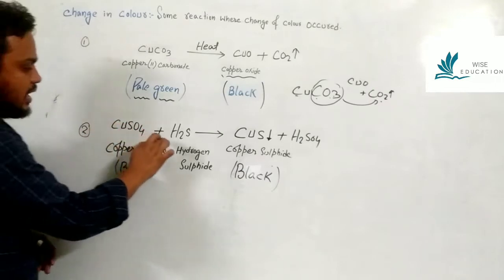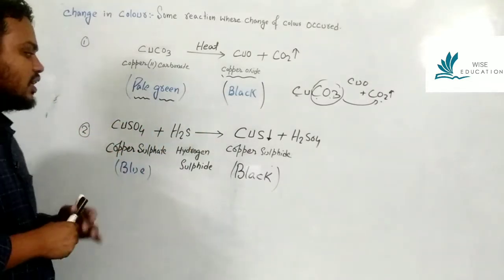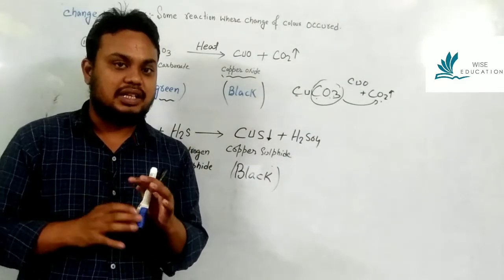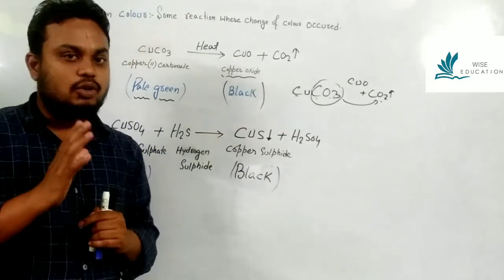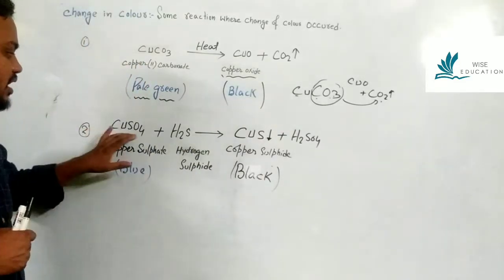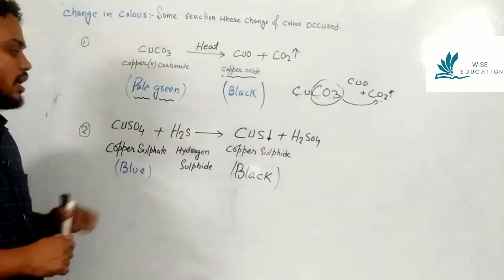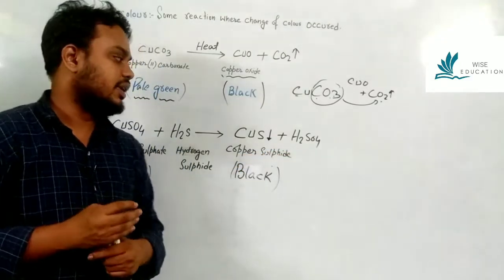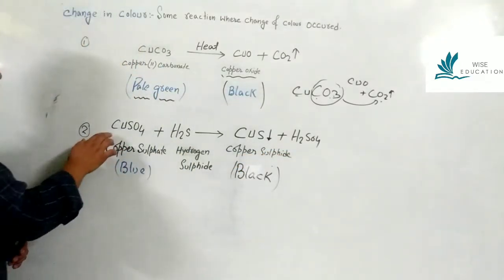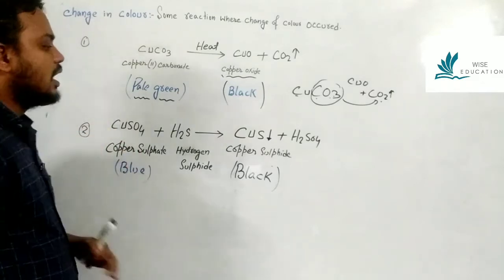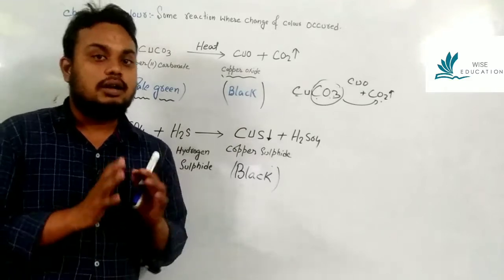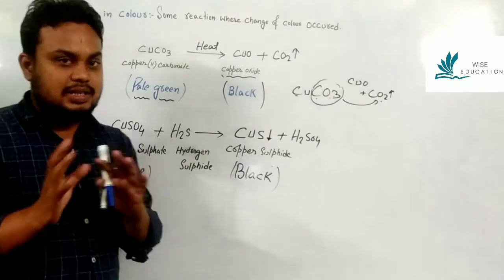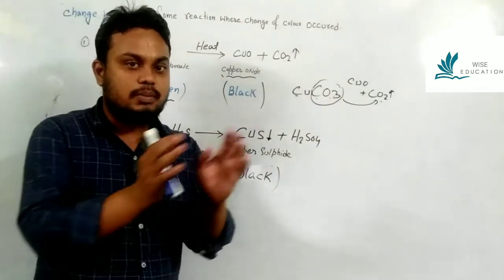Another example: copper sulfate when it reacts with hydrogen sulfide — here the change of color is observed. Copper sulfate is blue, and copper sulfide is black. So you can see a conversion from blue to black color in this reaction.